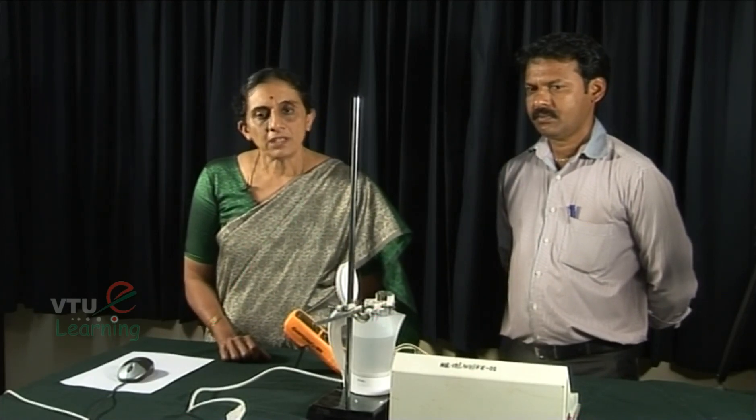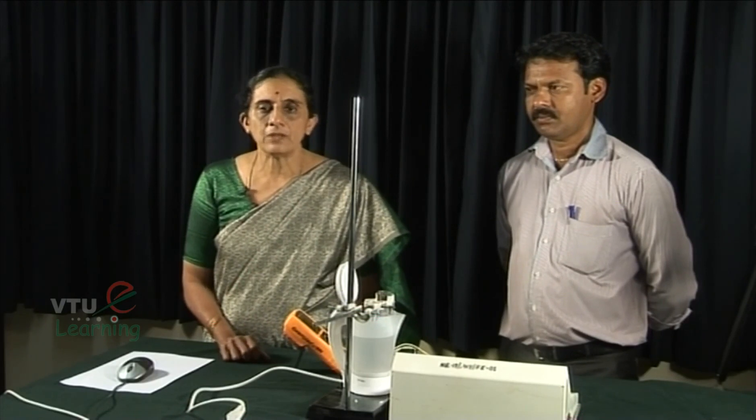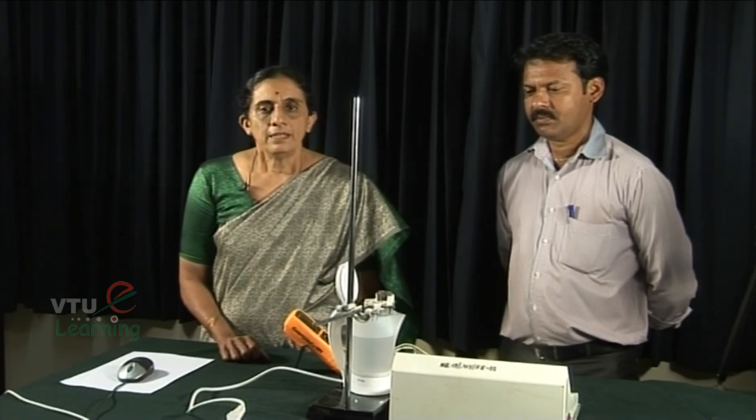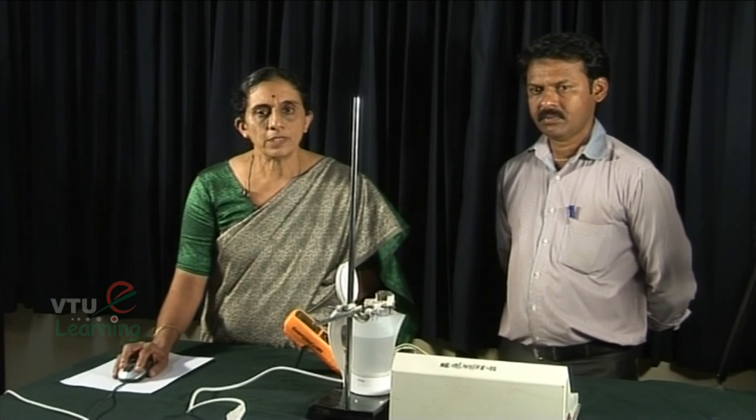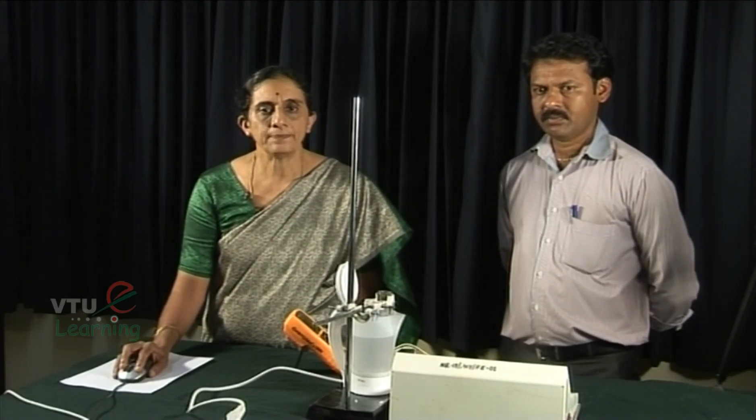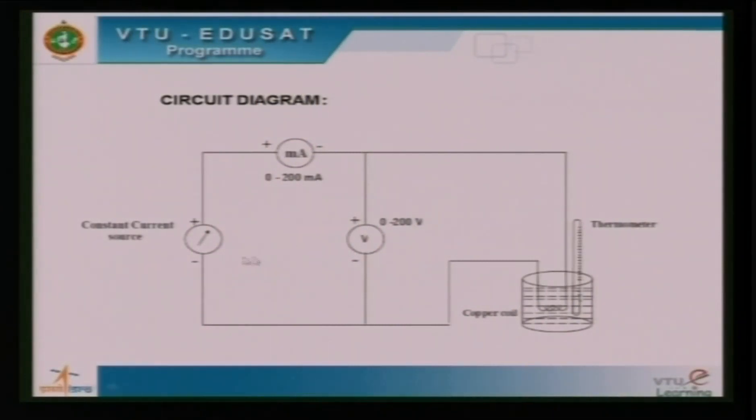There is excitation and de-excitation processes which take place across the Fermi energy level, and hence Fermi energy also can be thought of as the average energy of the conduction electrons. We now perform the experiment to determine the Fermi energy using the circuit as shown here. We have a series connection of the constant current source, the milliammeter, and the copper coil which is immersed in hot water bath which is fitted with a thermometer.